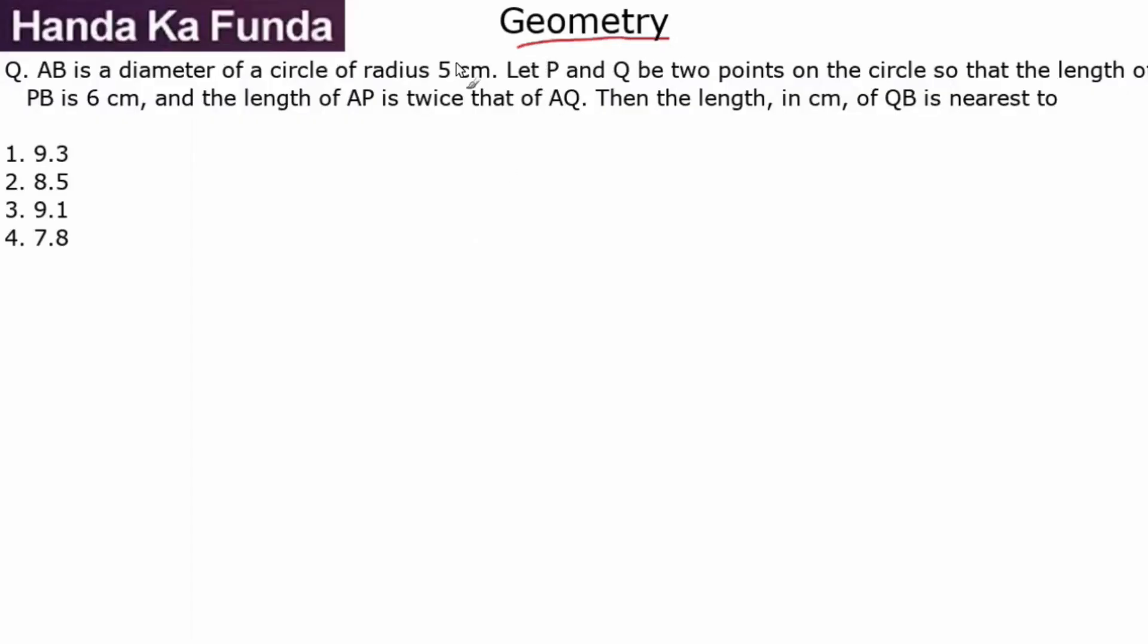In this geometry question we are given AB is a diameter of a circle of radius 5 centimeter. So let's say this is my circle and AB is my diameter where the radius is 5, which means my diameter is 10. Let's say this is the center. Let P and Q be two points on the circle so that the length of PB is 6.